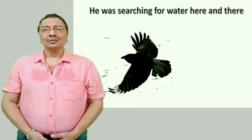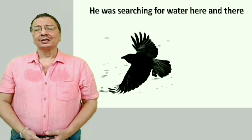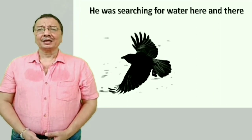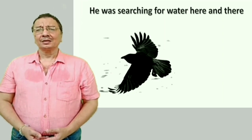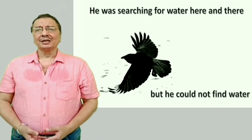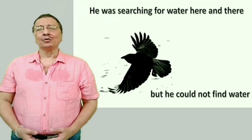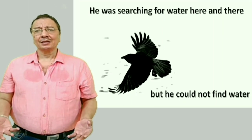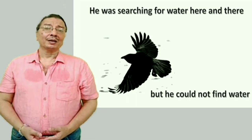Vah yahan vahan pani dhundh raha tha — He was searching for water here and there. 'Searching' means talashna, dhundhna. He was searching for water here and there. 'Was' is used for past tense. Lekin use kahin pani nahi mila — But he could not find water.